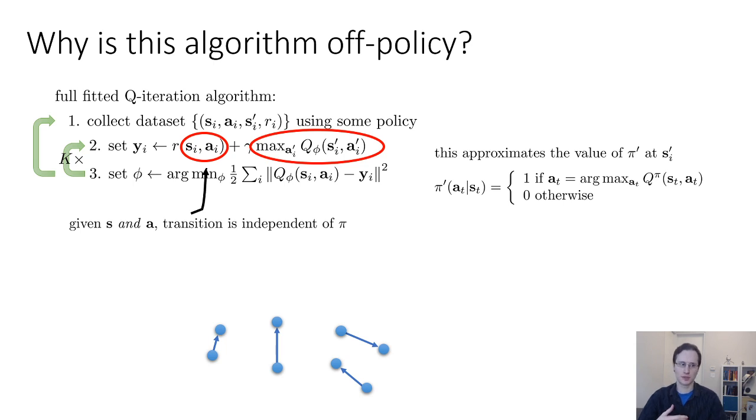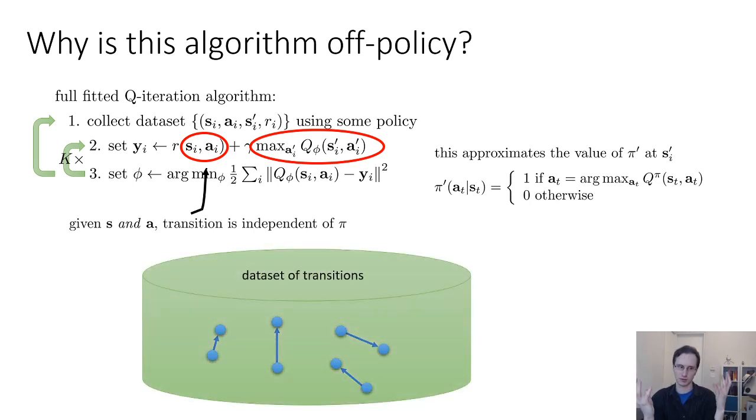So one way that you can think of fitted Q iteration structurally is that you have this big bucket of different transitions, and what you'll do is you'll back up the values along each of those transitions, and each of those backups will improve your Q value. But you don't actually really care so much about which specific transitions they are, so long as they cover the space of all possible transitions quite well. So you could imagine that you have this data set of transitions, and you're just plugging away on this data set, running fitted Q iteration, improving your Q function each time you go around the loop.